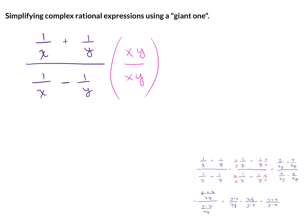Next, you are going to distribute the xy to every factor in the numerator, as well as every factor in the denominator. Writing it out, this will give us 1 over x times xy plus 1 over y times xy. And in the denominator, I will have 1 over x times xy minus 1 over y times xy.